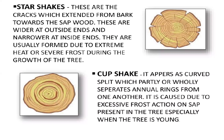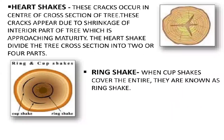Cup shake appears as a curved split which partly or wholly separates annual rings from one another. It is caused due to excessive frost action on sap present in the tree, especially when the tree is young. Heart shakes: these cracks occur in the center of the cross section of the tree — as the name says, the heart is basically in the center. This divides the tree cross section into two or four parts. Ring shake: when cup shakes cover the entire ring, they are known as ring shakes.